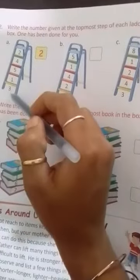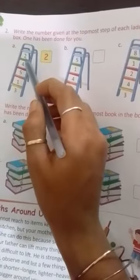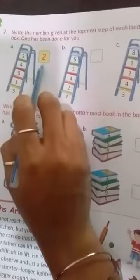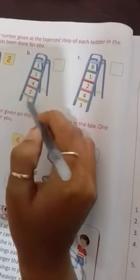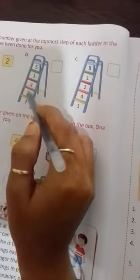As you can see, some numbers are given here. And in the box it's written 2. That means, which number is at the topmost? 2. So the answer here is 2. Similarly, these are two ladders. Now in these you have to see which is the topmost number, which is the first number, which is the top number. You have to write that properly in this box.